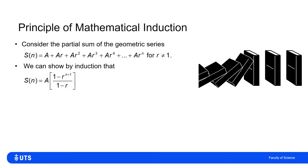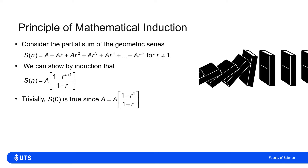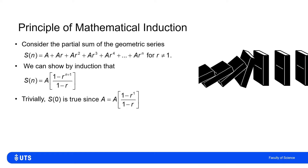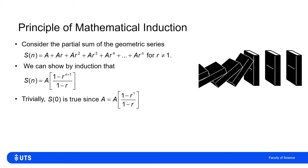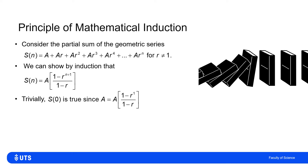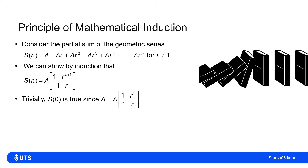We have to do two stages for the proof by induction. The first stage is to show it's true for the first case — the 0th power here. Setting n = 0, S(0) should equal a. And indeed, setting n = 0 in our formula gives a × (1 - r^1)/(1 - r) = a × (1 - r)/(1 - r) = a. So it's definitely true for n = 0.